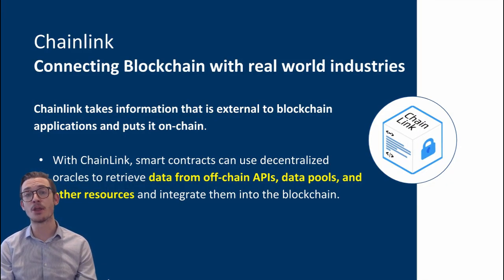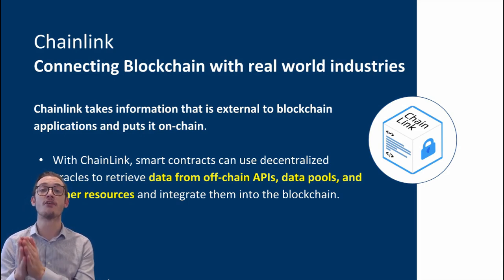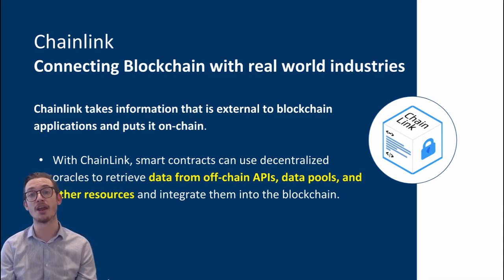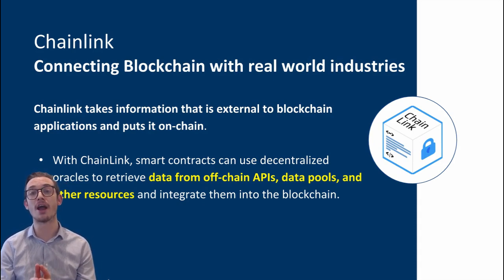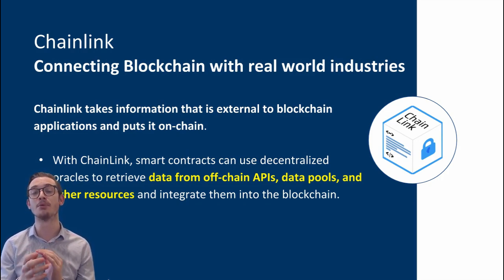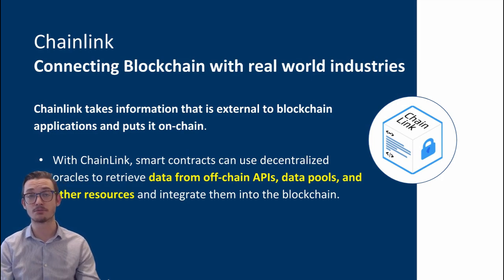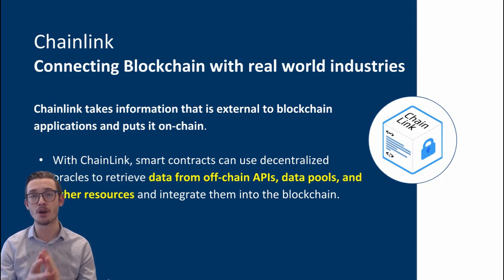Let's start with a quick overview of what Chainlink is looking to do. Chainlink is looking to connect blockchain to real world industries — it takes information external to blockchains and puts it on-chain. With Chainlink, smart contracts can use decentralized oracles to retrieve data from off-chain APIs, data pools, and other resources, and integrate that highly valuable information onto a blockchain.